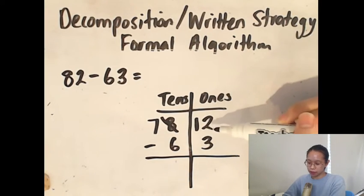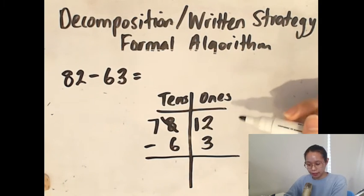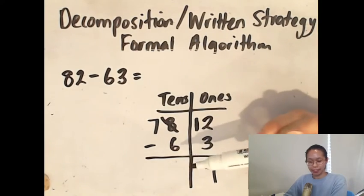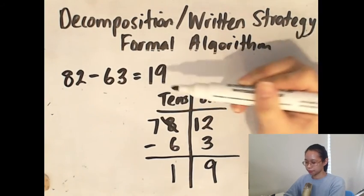So now we can do 12 minus 3. 12 minus 3 is 9. Now we can do the tens column, which is 7 minus 6 is 1. So our answer is 19.